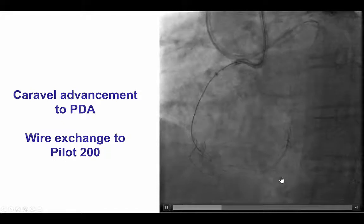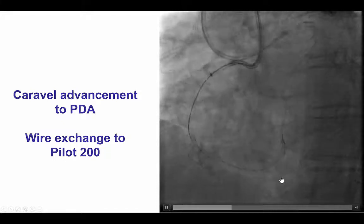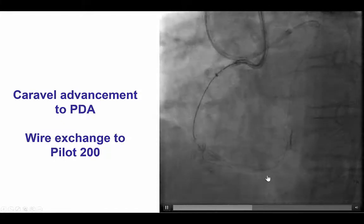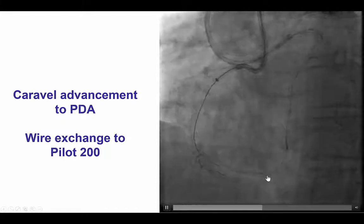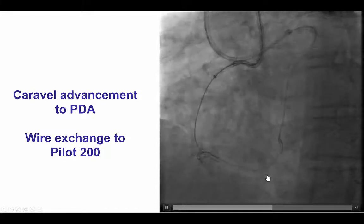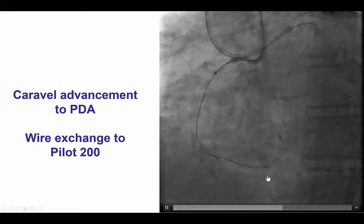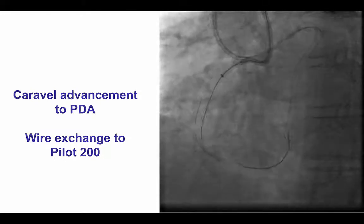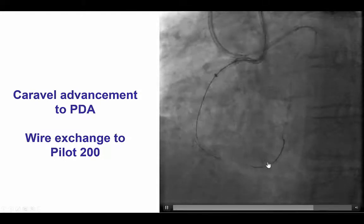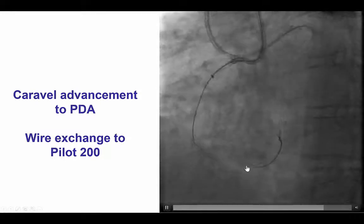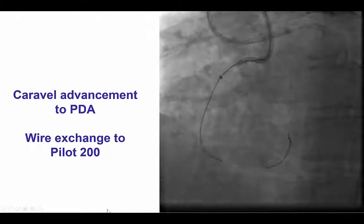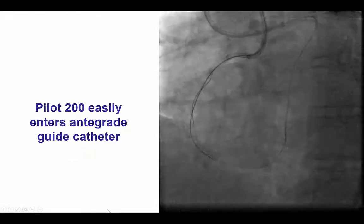But again, with prolonged attempts, we were finally able to make that turn, and then the Caravel was advanced all the way — there it is, it just jumped — and was advanced all the way to the distal right coronary.